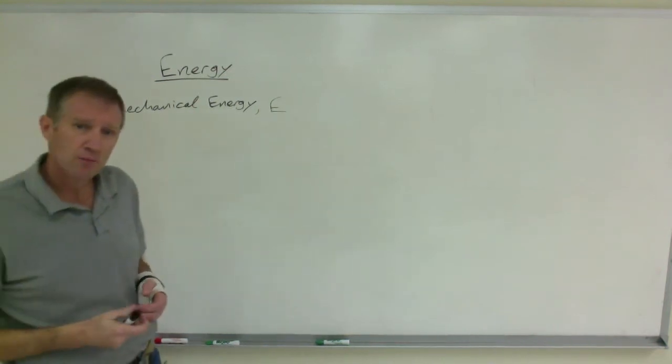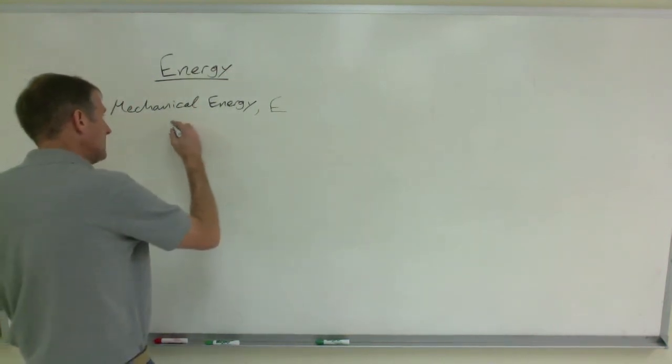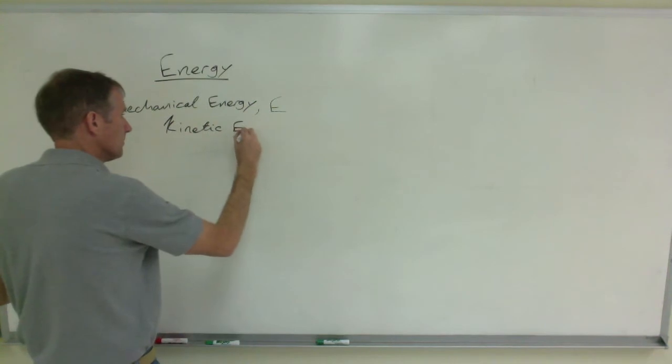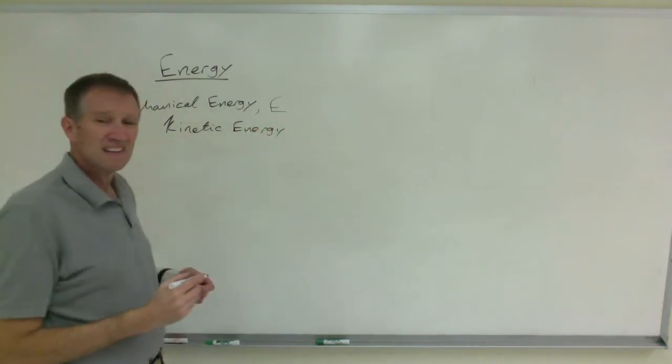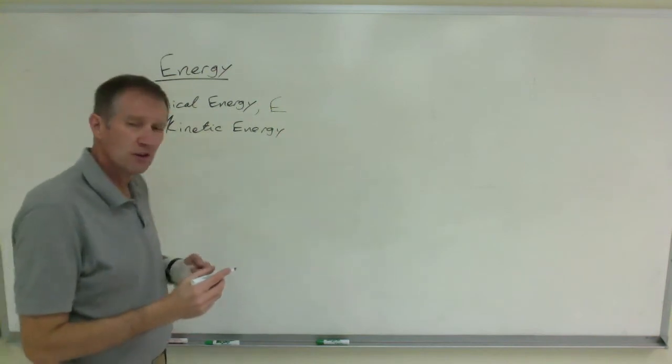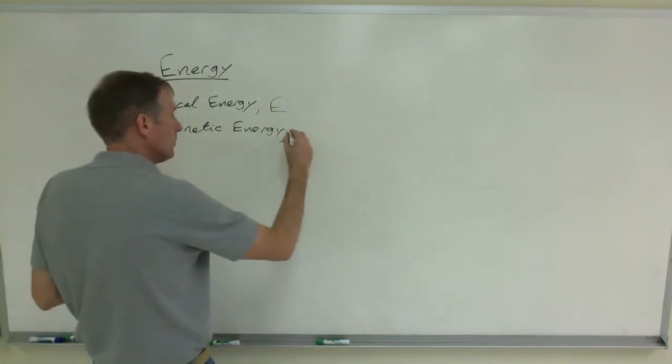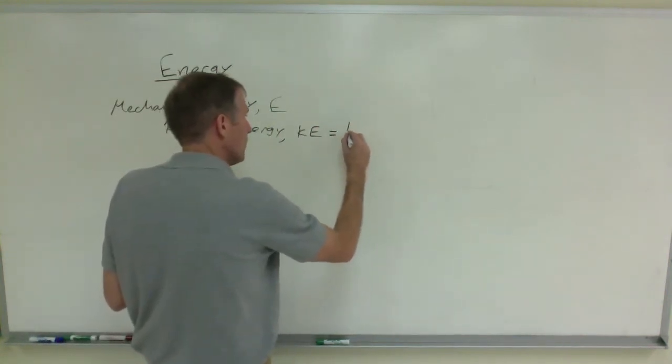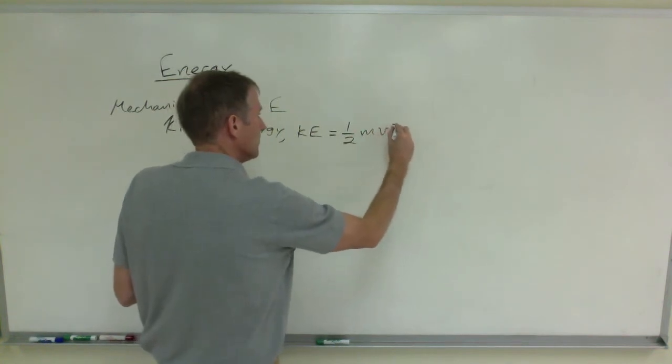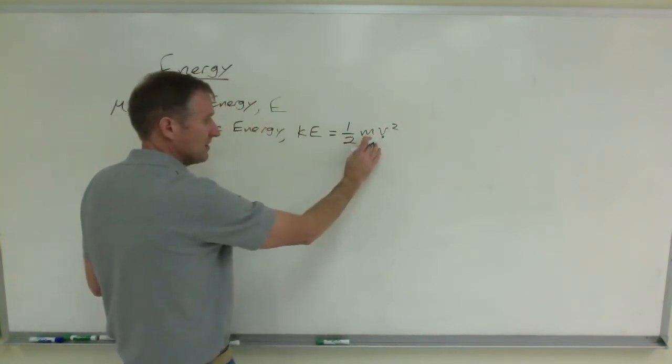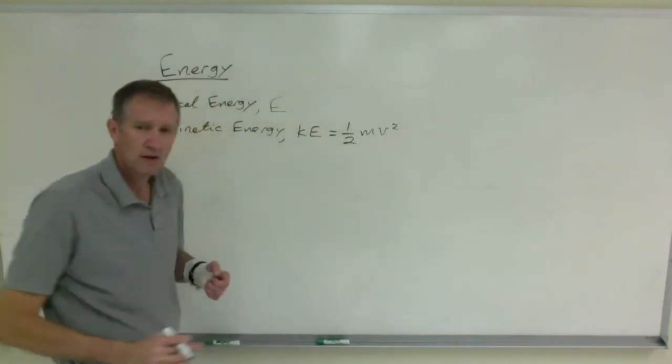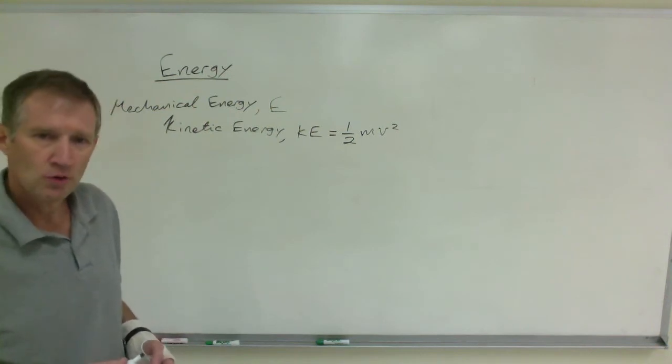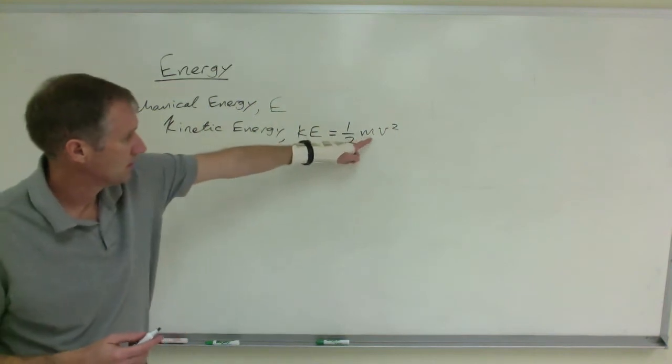We are going to focus on two types of mechanical energy. We're going to look at kinetic energy, which, again, is the energy of motion, the energy associated with the moving object. We will use KE to represent that. And the equation for kinetic energy is one-half mv squared. One-half times the mass in kilograms times the speed squared. The speed has to be in meters per second. The units will be joules. That's the energy of an object in motion.